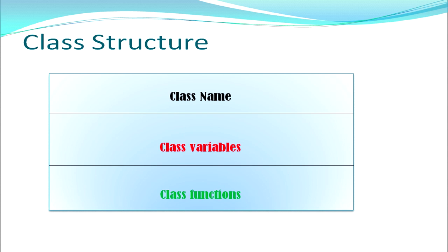A class structure consists of the class name, the variables or data to store, and the functions. For example, if I want to store the record of students, the class name can be 'student', variables can be roll number, name, marks, address, date of birth, and functions can be to accept this data and to calculate percentage and display. So I can access data items only through these member functions, not from anywhere else.